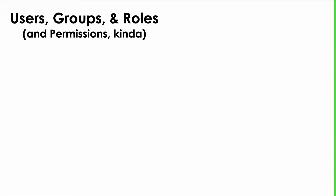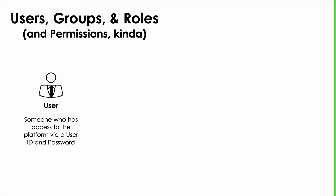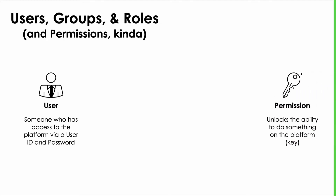A user is an entity — normally a person — who has access to the platform. Every user gets a user ID and password which allows them to log in. A permission is the ability to do something on the platform — you can think of it as a key that unlocks some piece of platform functionality. The goal is to connect each user with the permissions they need to get their work done. No more, no less.